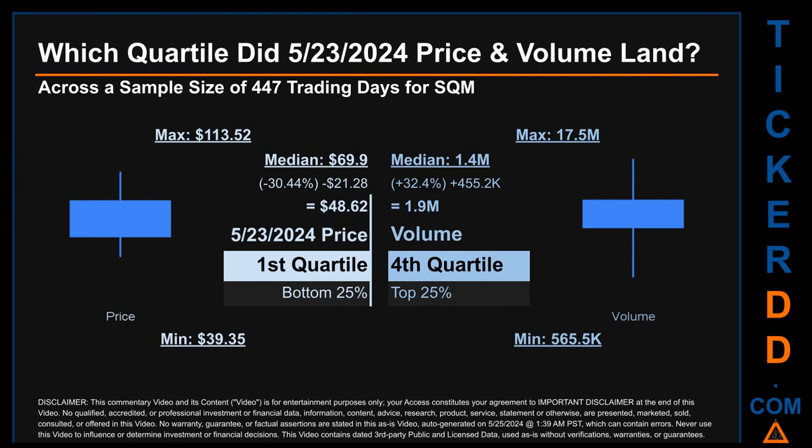Volume saw a maximum daily volume of 17.5 million and a minimum of 565.5 thousand. Quartiles tell us about the spread of a data set by breaking that data set into quarters, just like how the median breaks the set in half. Descriptively, SQM has a median price of $69.90; therefore, May 23rd's price was lower than that middle marker by $30.44. The day's volume of 1.9 million was more than the median by $32.4 thousand.